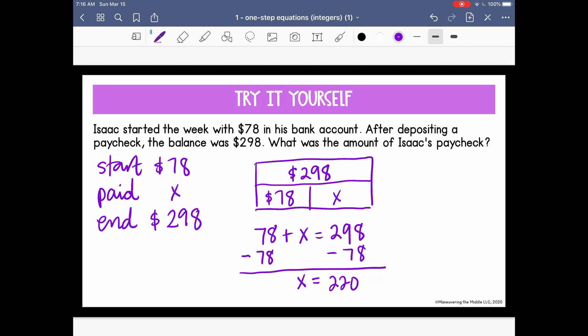And when I go back to my problem, I can see that's $220. And that does make sense. If Isaac has $78 and we put $220 in his bank account, then it would make sense that he gets $298 as his balance.